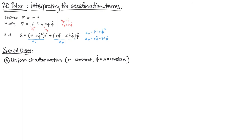Mathematically, uniform circular motion means we have an object moving in a circle, meaning the radius is constant — the distance of the object from the origin is constant. And 'uniform' means constant speed, which can also be phrased as constant angular speed. So phi dot is the rate of change of angle and that's going to be a constant. Sometimes we call phi dot omega for angular speed.